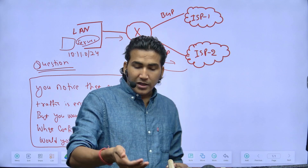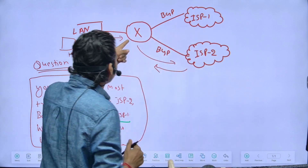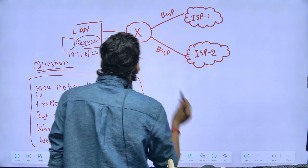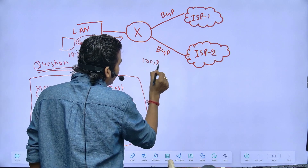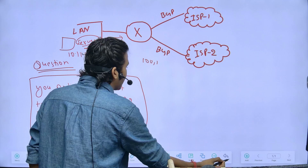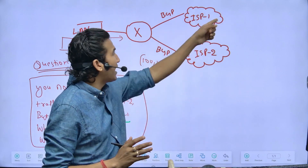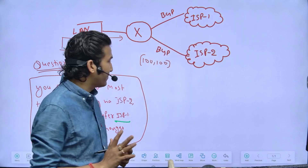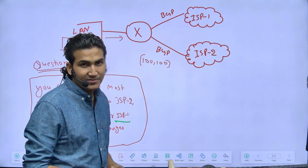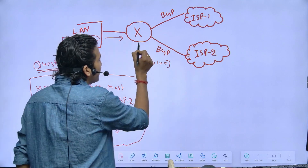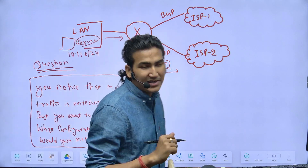For influencing inbound traffic, we apply the route-map in the OUT direction. We tell the router: whenever you advertise this LAN subnet to ISP 2, prepend the AS number — for example, add AS 100 twice. Now ISP 1 will automatically become the best path and you will start receiving traffic via ISP 1, because ISP 2 will see a longer AS path.